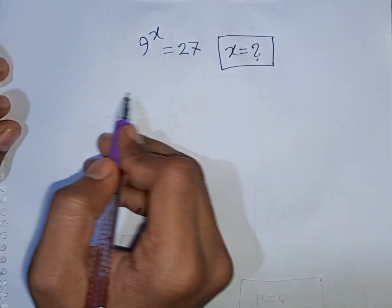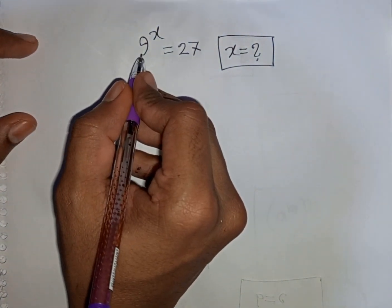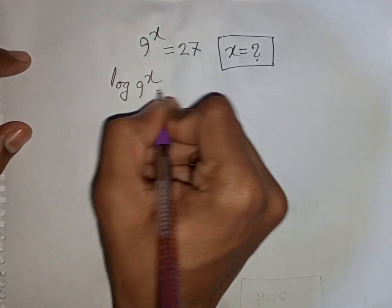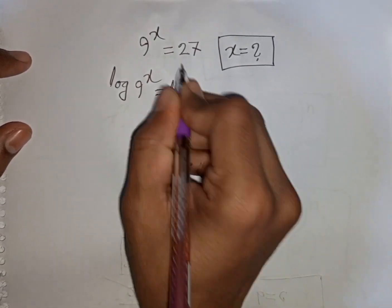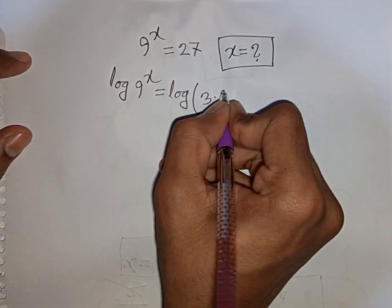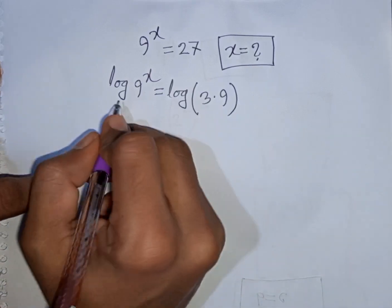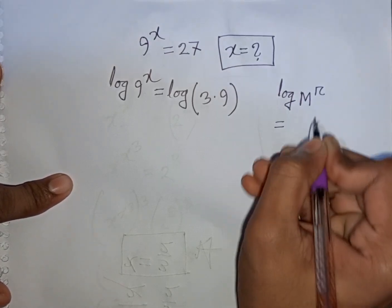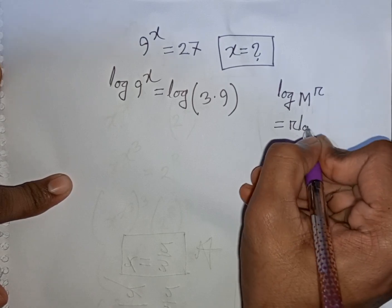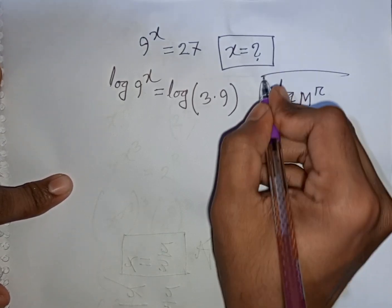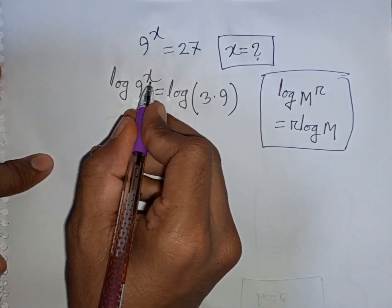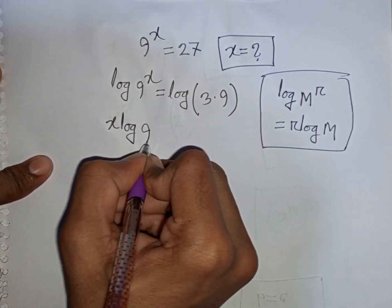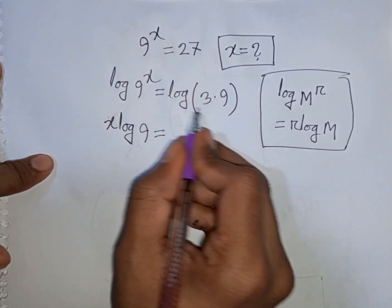Now we can apply another method to solve this problem. First, we take log on both sides. Log of 9 power x is equal to log of 27, which can be written as log of 3 times 9. Here we can apply the rule that log m power r is equal to r log m. According to this rule, the power x will move to the front, so we write x log 9 is equal to the right-hand side.